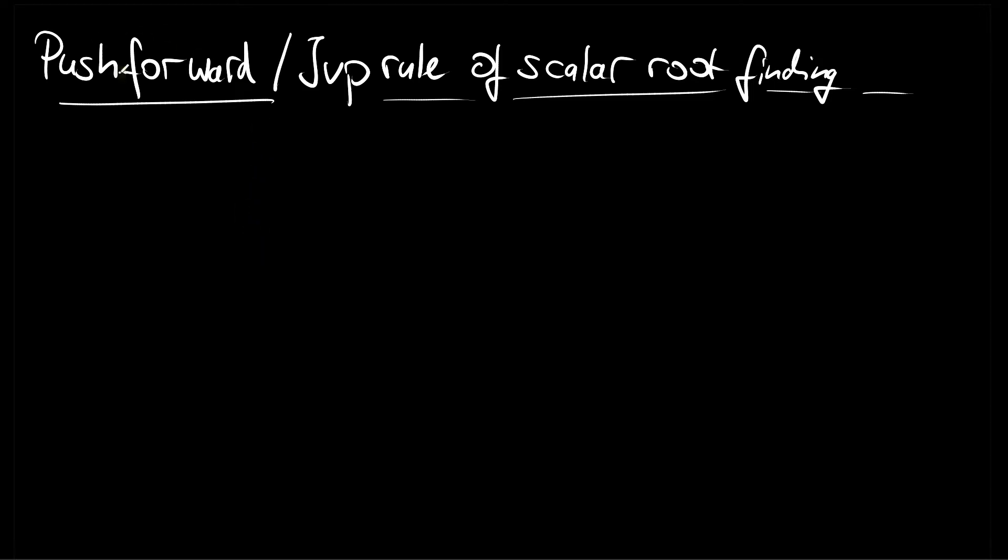In this video we're going to derive the pushforward or Jacobian vector product rule for scalar root finding. You can think of scalar root finding as a function that takes a scalar argument, let's call it theta, and then is given implicitly by the solution to a scalar root finding problem.